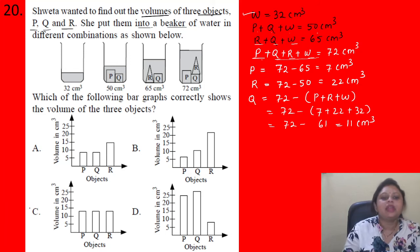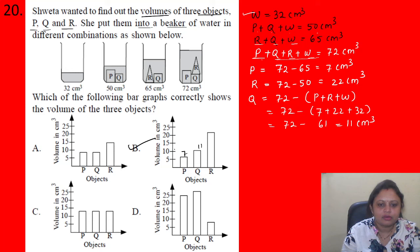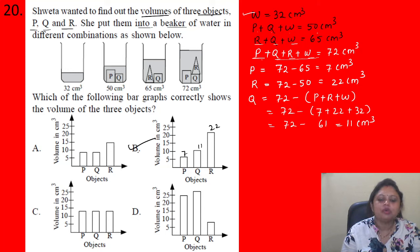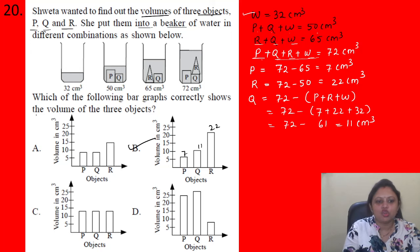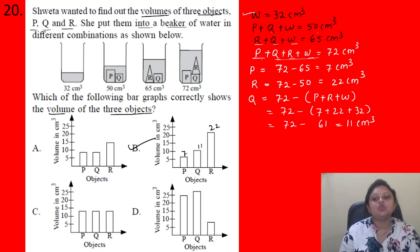Matching the values to the graph options: P is 7, Q is 11 (slightly more than 10), and R is 22 (more than 20). Option B correctly represents these values. So the correct answer is option B.